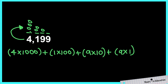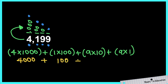We multiply it: 4 times 1,000, plus 1 times 100, plus 9 times 10, and 9 times 1 — multiply the groups by the place value. That gives us 4,000, plus 100, plus 90, plus 9. Expanded form and expanded notation — the green is expanded notation, the yellow is expanded form.